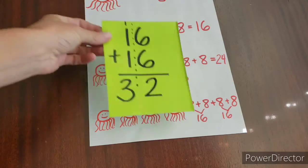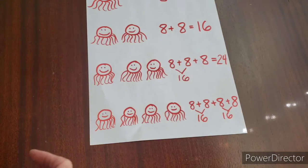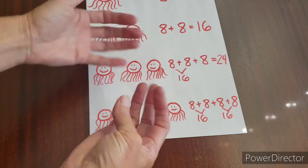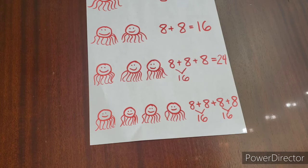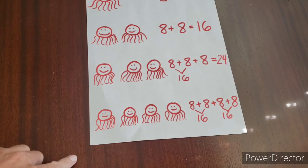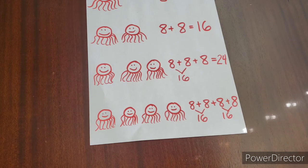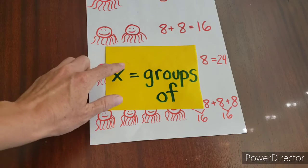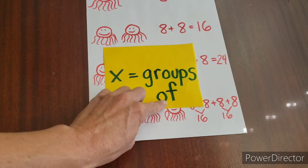So we know we can do double-digit addition. We can do counting on. And another thing that we can do is multiply. Multiply means you're adding the same number twice. Okay, so when you think of multiplying, I want you to think of this X, and the X means groups of.